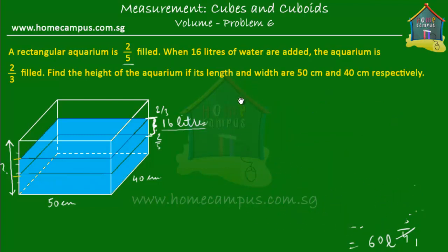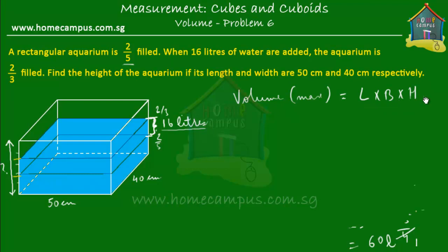The maximum volume equals length times breadth times height: V = L × B × H. We know the maximum volume is 60 liters, the length is 50 centimeters, the breadth is 40 centimeters, and we have to find the height.